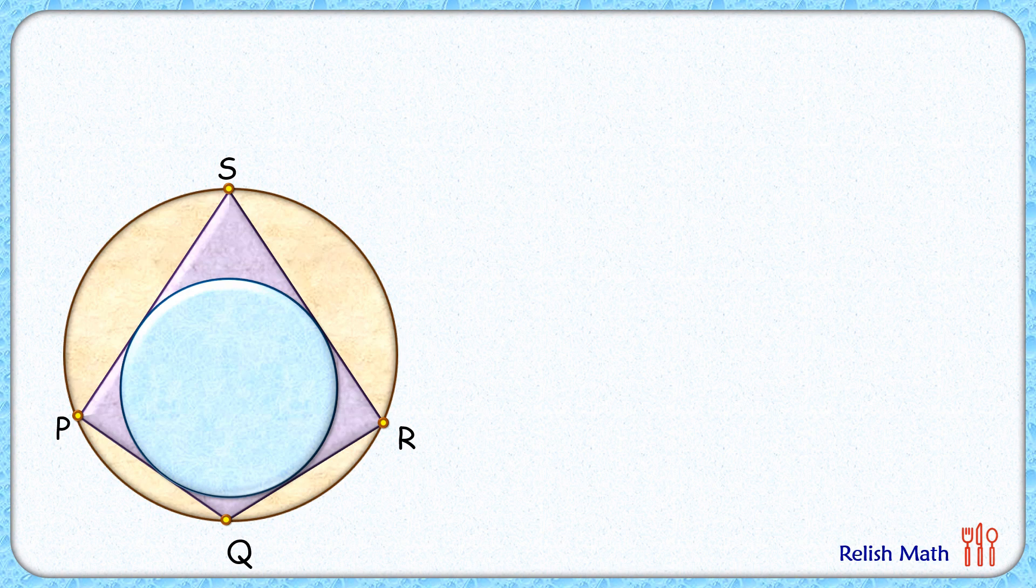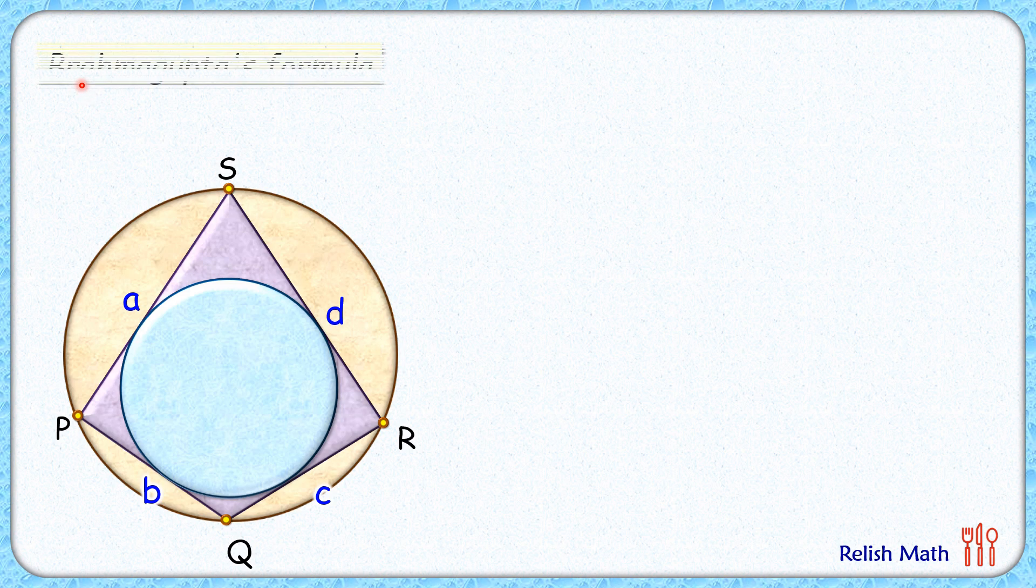Let's start by assuming the sidelines of the quadrilateral as a, b, c, and d. With respect to the brown circle, it's a cyclic quadrilateral, and we know that all cyclic quadrilateral areas can be found using Brahmagupta's formula.